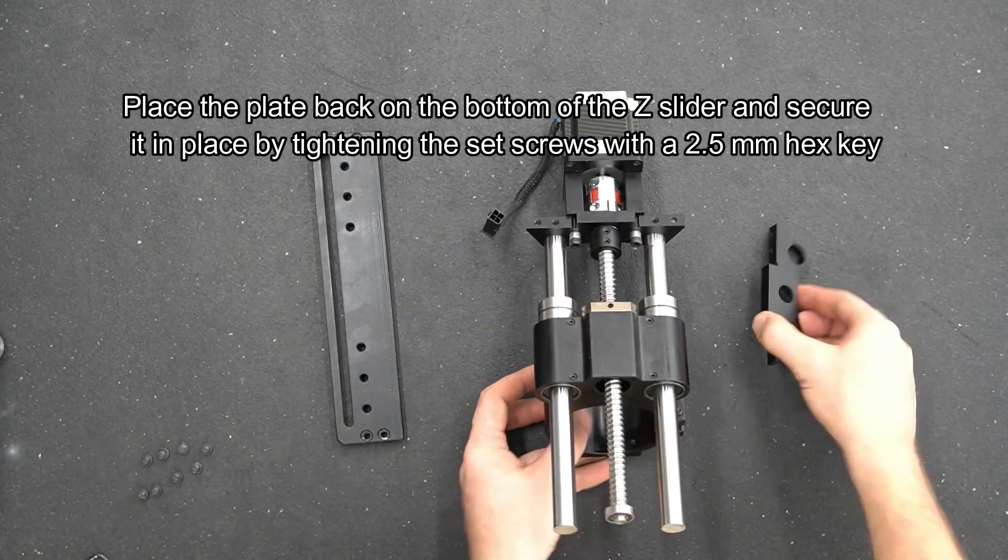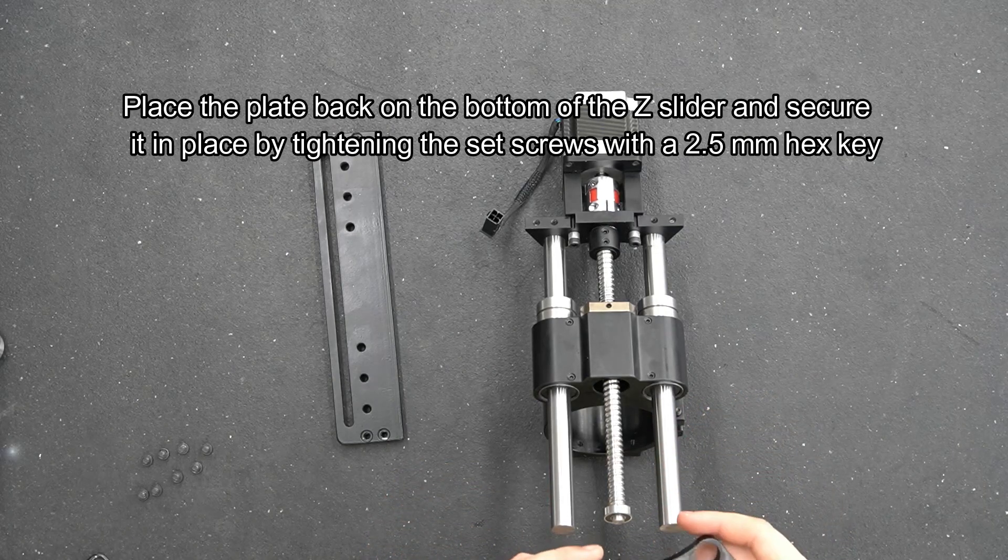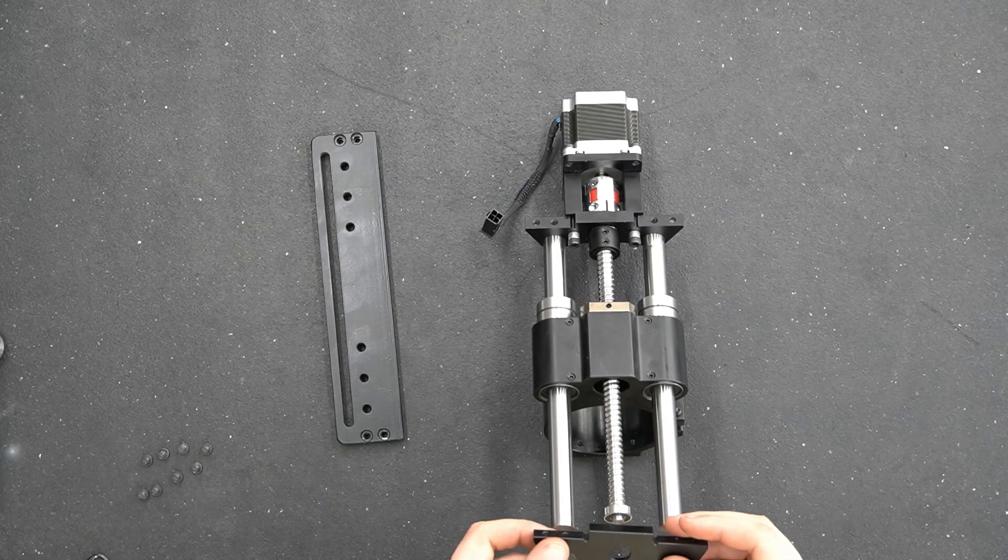Place the plate back on the bottom of the Z slider and secure it by tightening the set screws with a 2.5mm hex key.